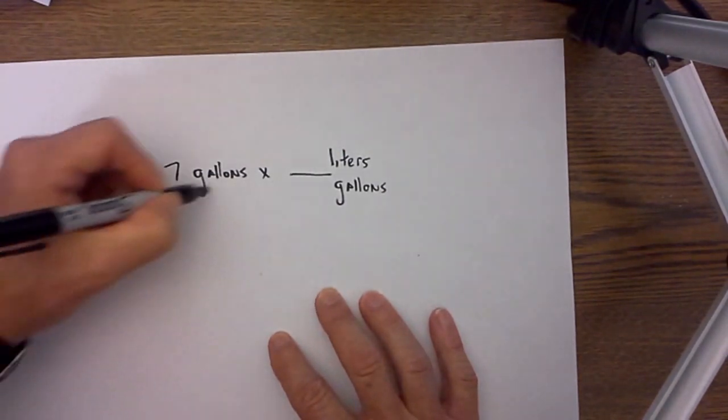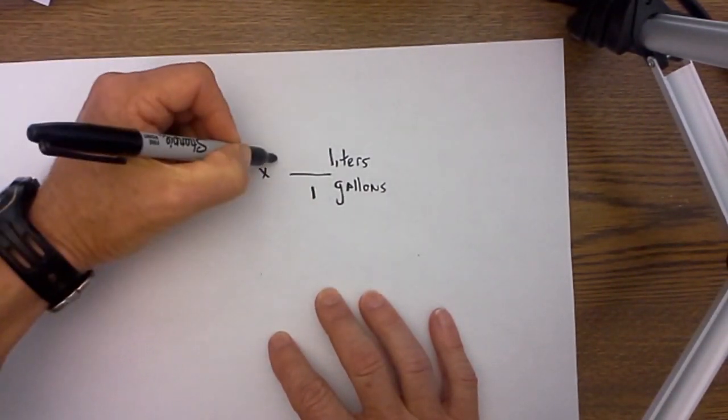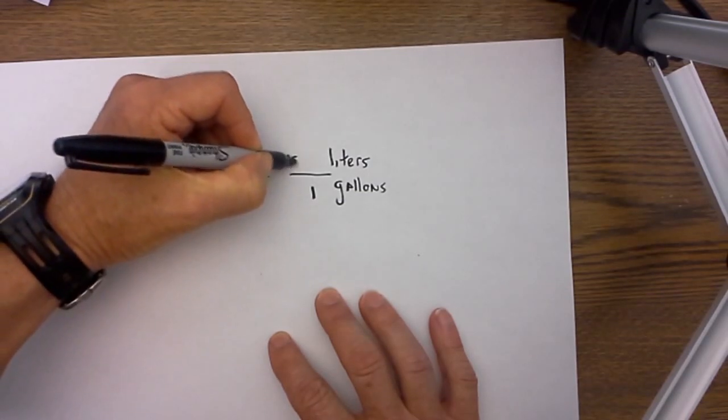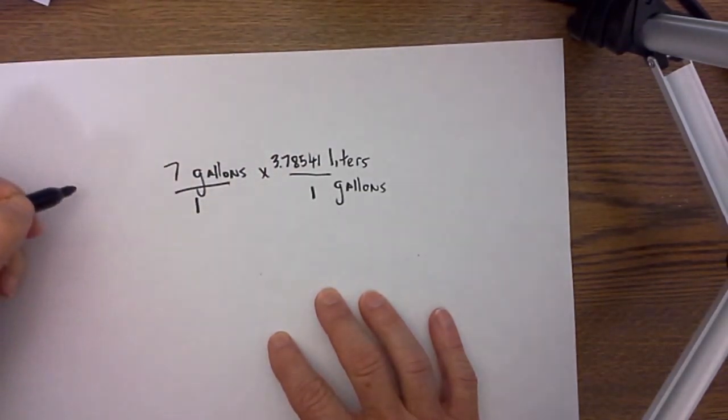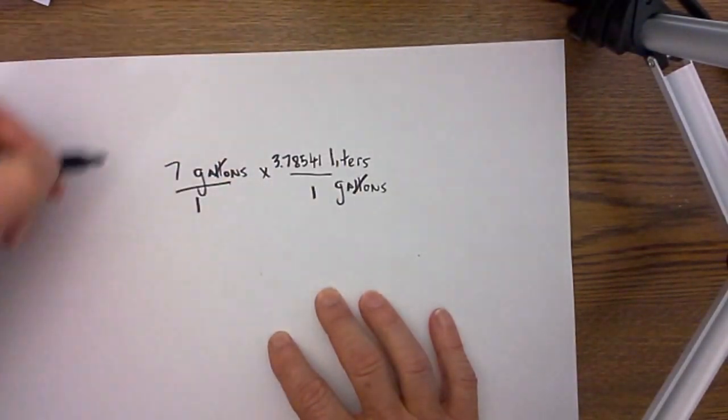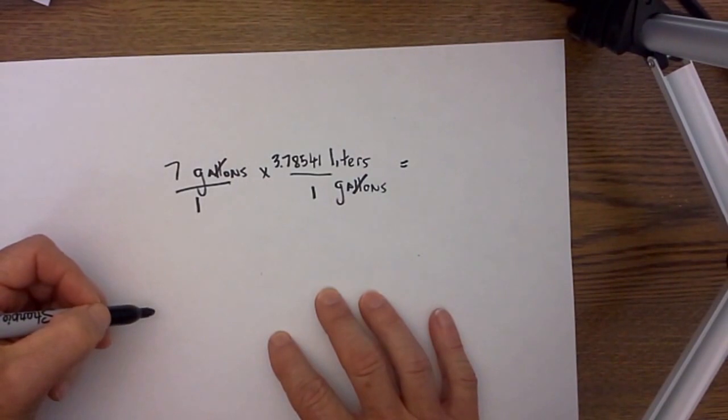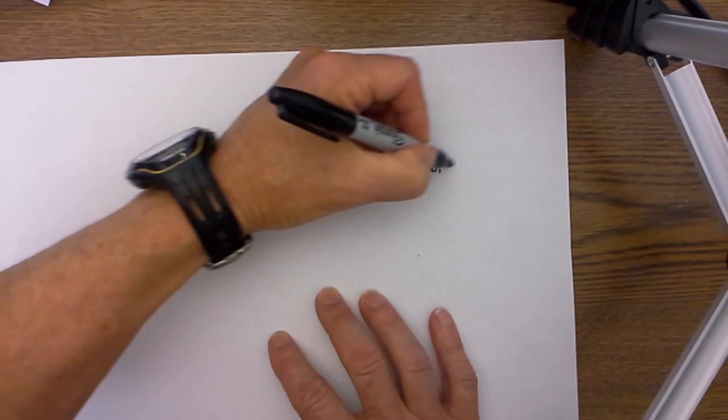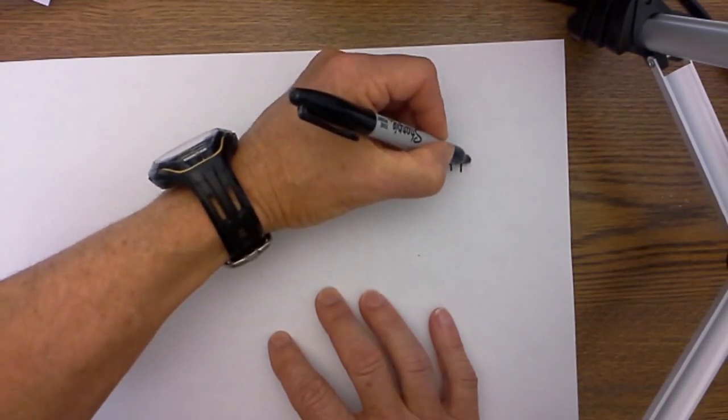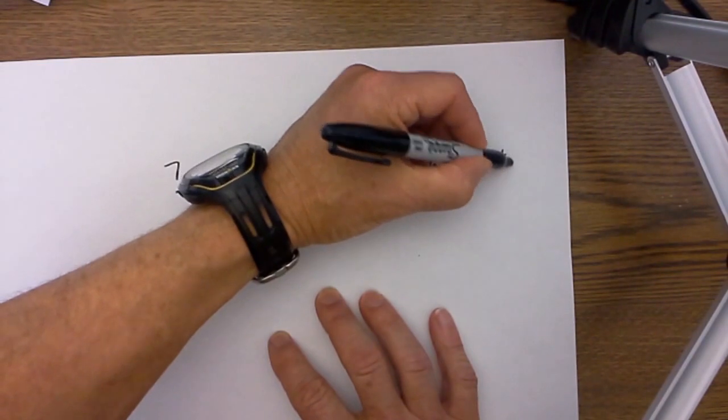I then ask myself which is larger. Gallon is larger. 1 gallon is equal to 3.78541 liters. I place this over a 1, gallons cancel, 7 times 3.78541 is equal to 26.4979. The gallons cancel and I am left with liters.